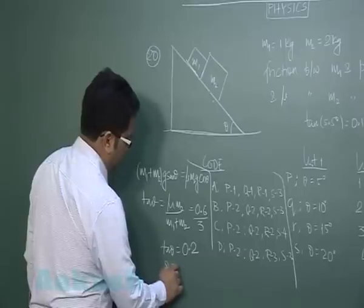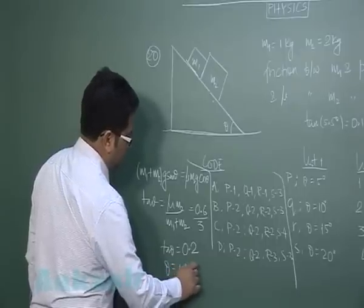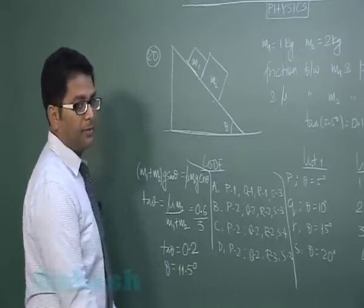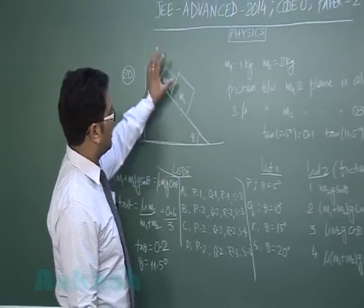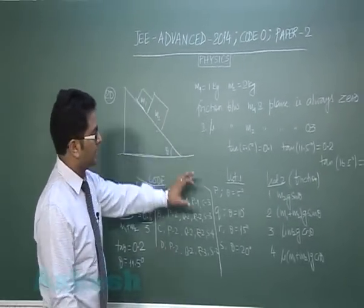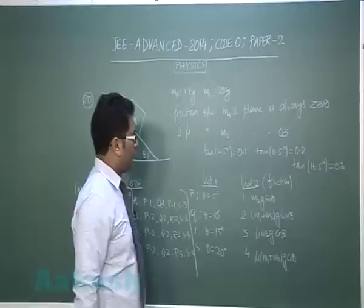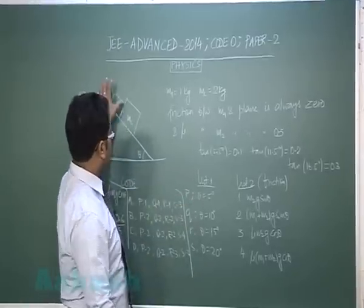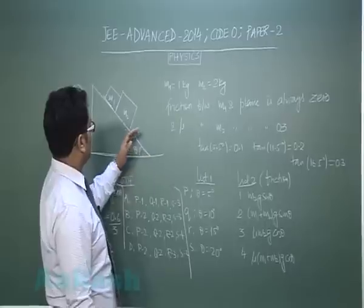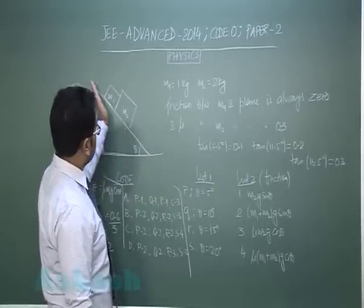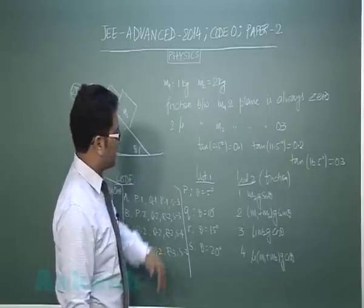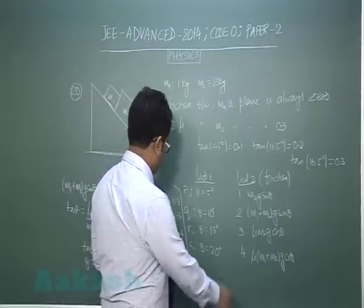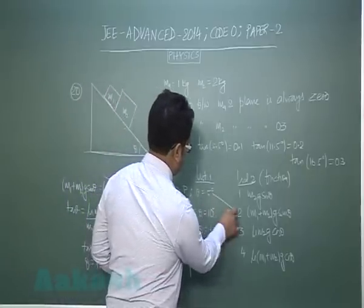It means when theta is 11.5 degrees, the system starts sliding. So it's all clear now. At 5 degrees, the system is at rest, so static friction would be equal to the force trying to move, and that's M1 plus M2 times g sin theta.